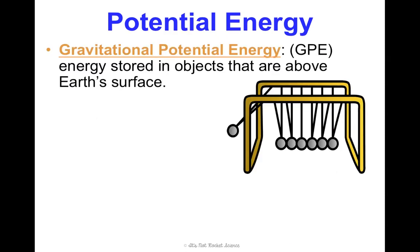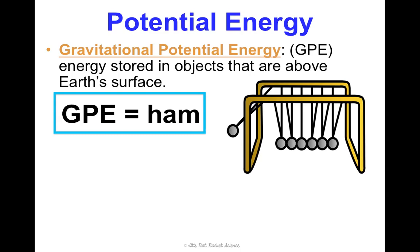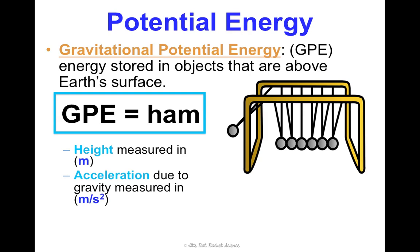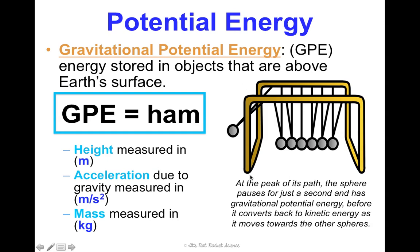The type we'll spend the most time on is gravitational potential energy, abbreviated GPE — energy stored in objects that are above Earth's surface. Even in this Newton's Cradle, being held upward above Earth's surface, it has potential energy. We can calculate it: GPE equals ham, where H is height in meters, A is acceleration due to gravity at 9.8 meters per second squared, and M is mass in kilograms. When I drop it, that stored energy gets converted to kinetic energy because it's in motion, and when it hits the other spheres, it can transfer that energy.